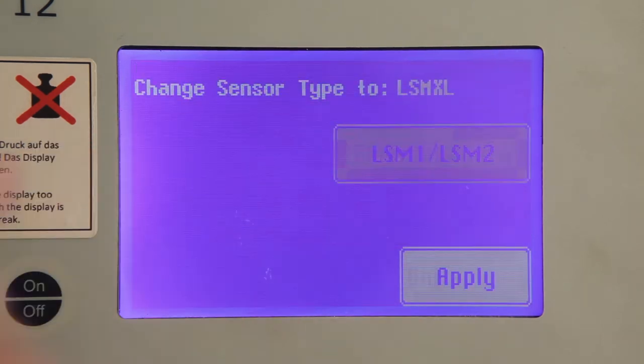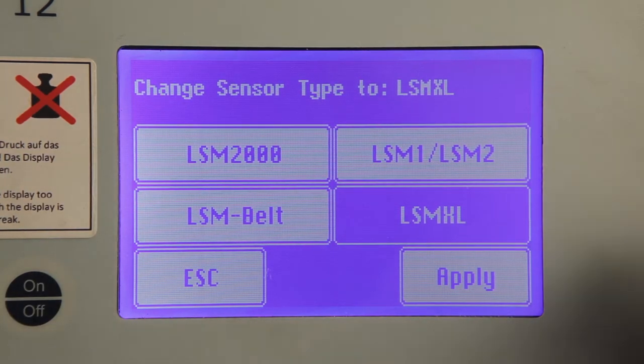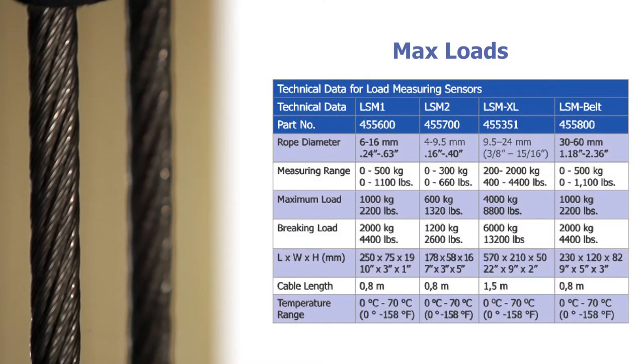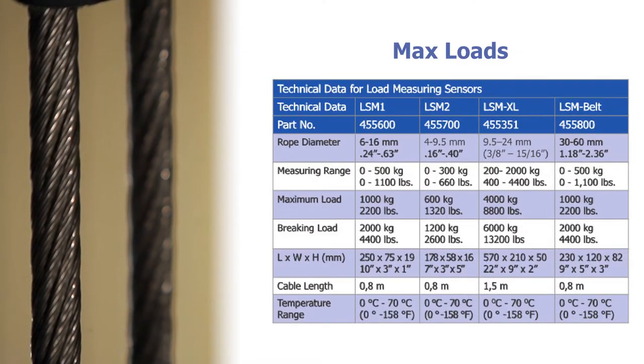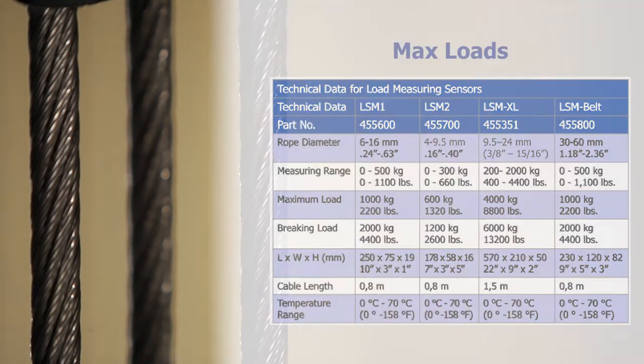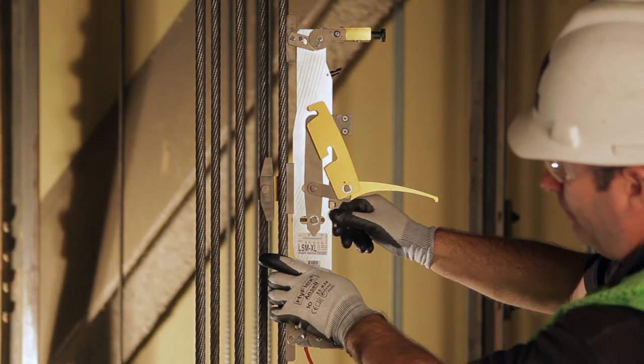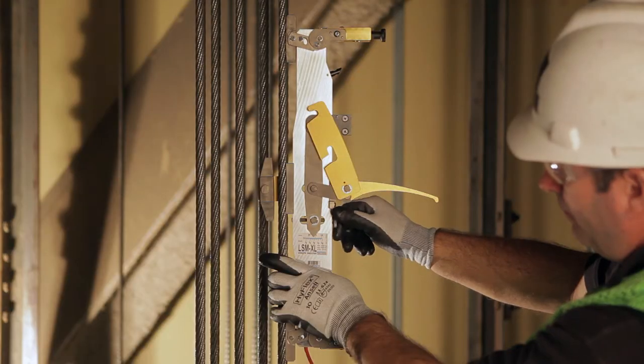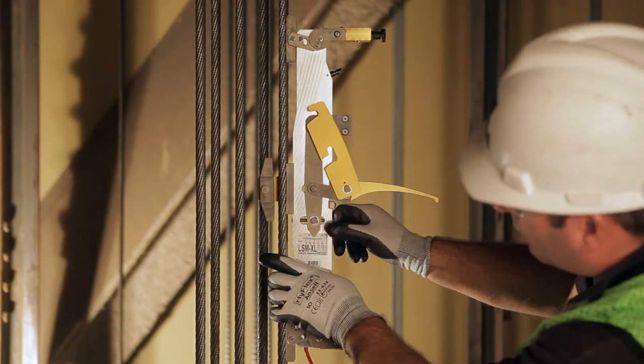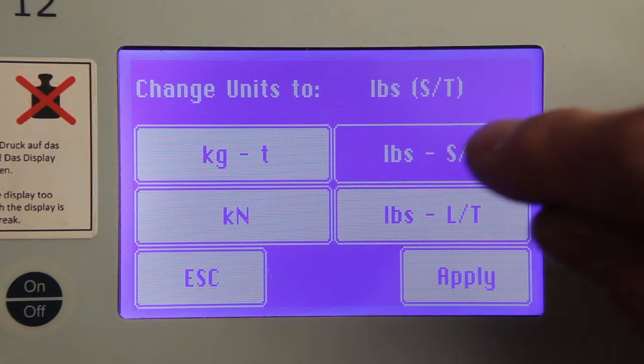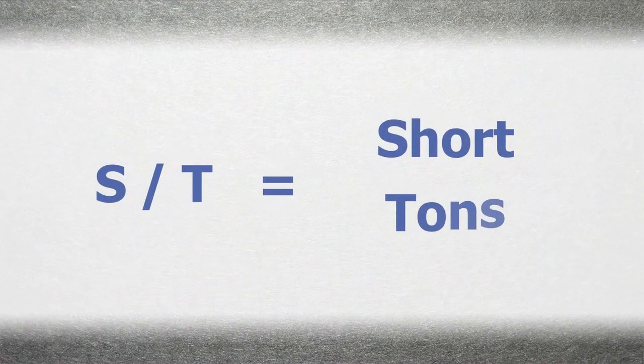Use the correct rope sensor size according to the measurement and load range capability of the sensors, the diameter of your ropes, and most importantly, the possible maximum load expected on any one rope in your system. When using the LSM XL sensor in North America, where measurements are made in pounds, the correct unit of measurement setting is ST, which stands for short tons.